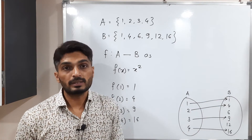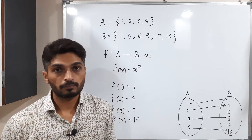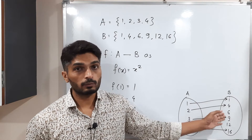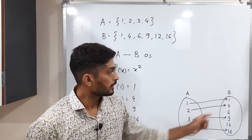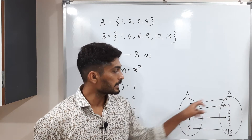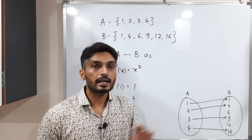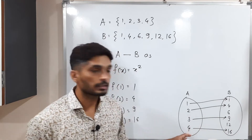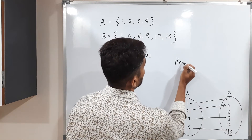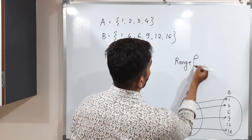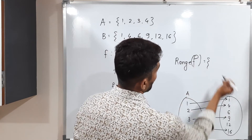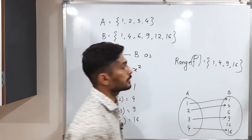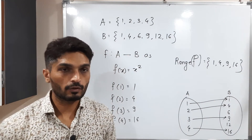There is one more set — the range set. The range set means the set of elements of B which have a pre-image. Here: 1 has pre-image 1, 4 has pre-image 2, 6 has no pre-image, 9 has pre-image 3, 12 has no pre-image, and 16 has pre-image 4. So the range set of f is {1, 4, 9, 16}.